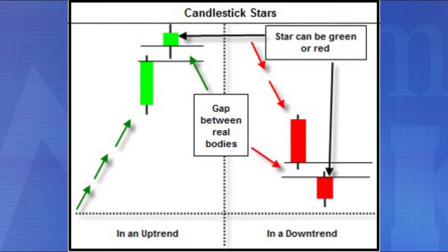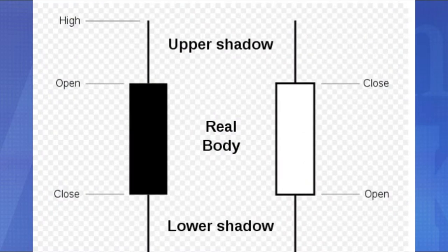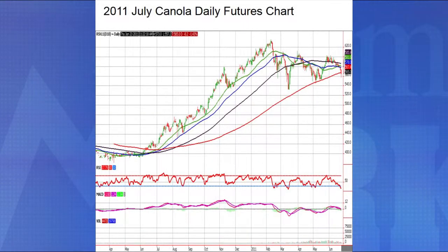A candlestick chart is a style of bar chart — a combination of a line chart and a bar chart where each bar represents the range of price movement over a given period. Candlestick charts are thought to have been developed in the 16th century by a Japanese rice trader. The chart has a body with a wick on either side — top and bottom. The upper shadow is the high and the lower shadow is the low. Nowadays with computers, a higher close from the previous day is depicted in green or blue, while a lower close is depicted in red, as you can see in this example with the 2011 July Canola daily futures chart.